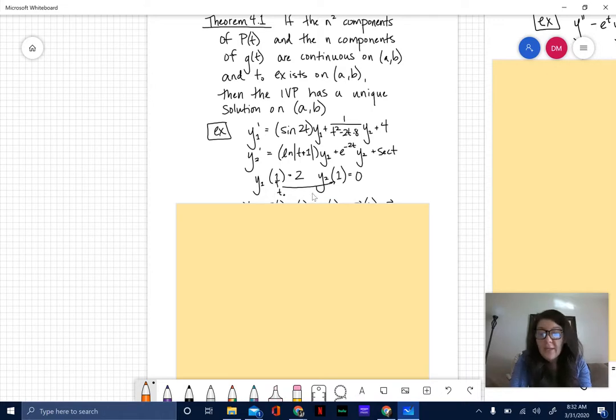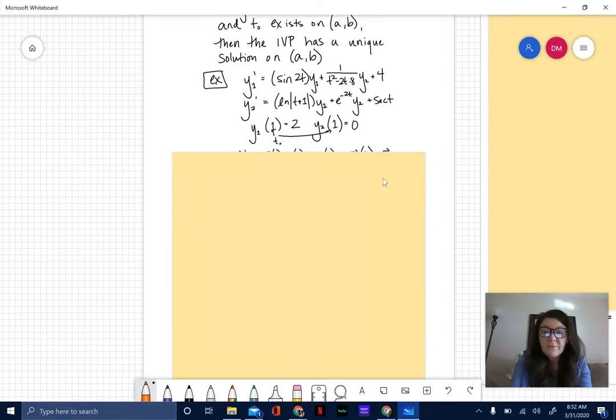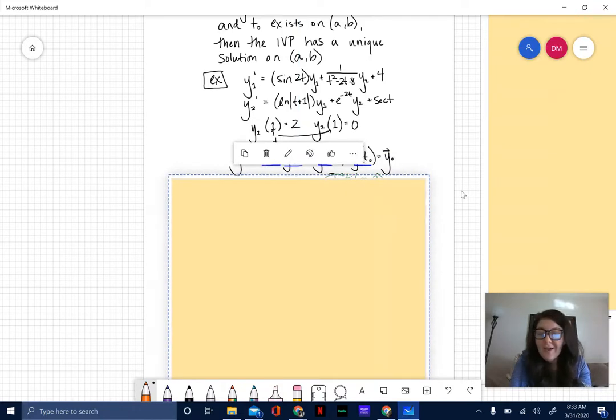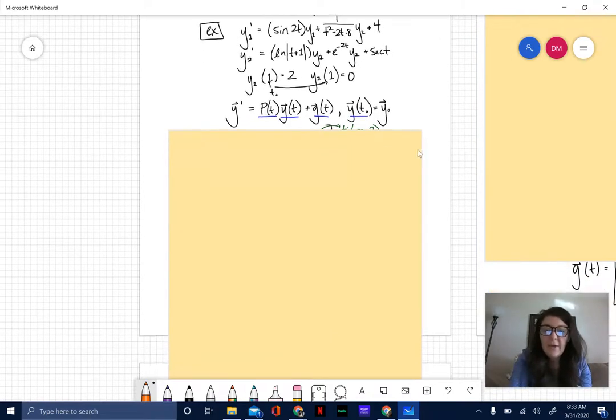Getting this into matrix form - you can kind of peek when the note goes transparent there. I want you to go ahead and pause the video here, take a second, write out what this looks like in the standard matrix form of the equation and make sure you include the initial value as well.